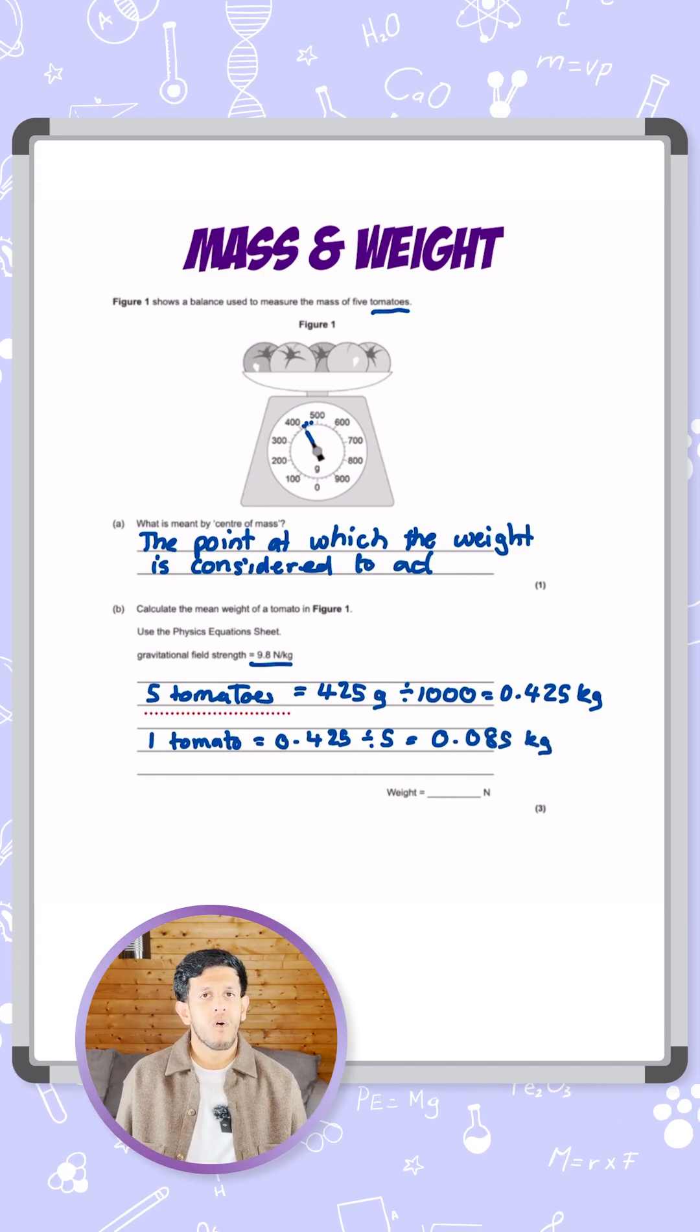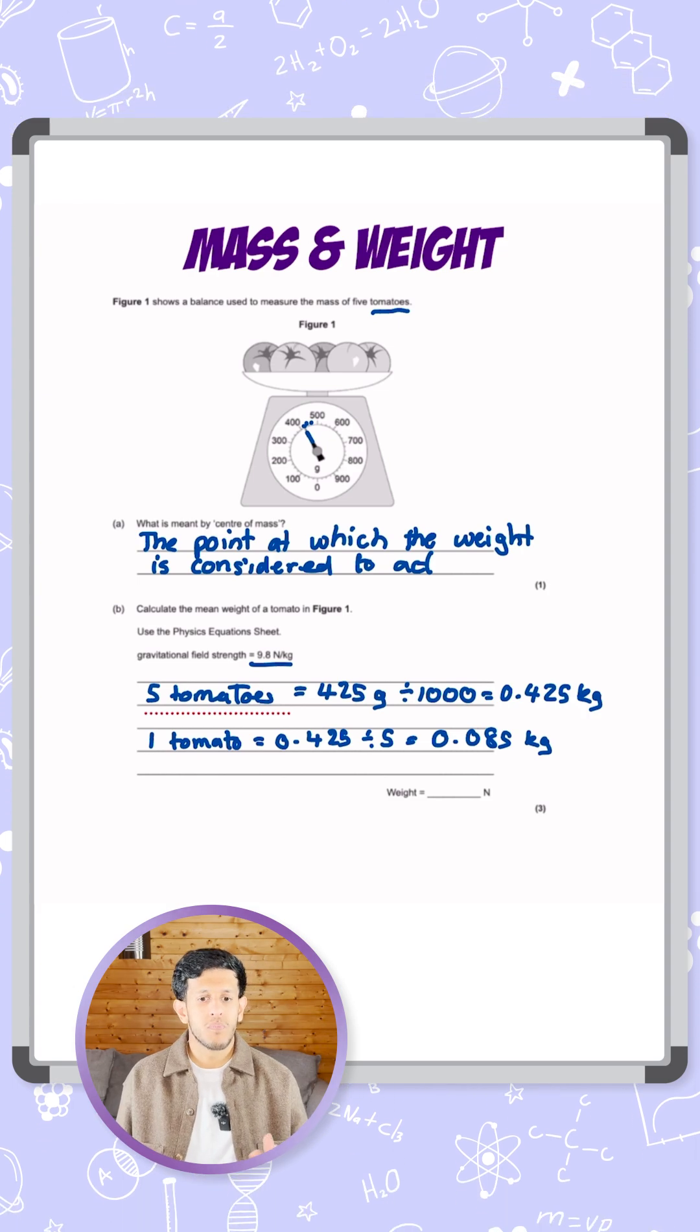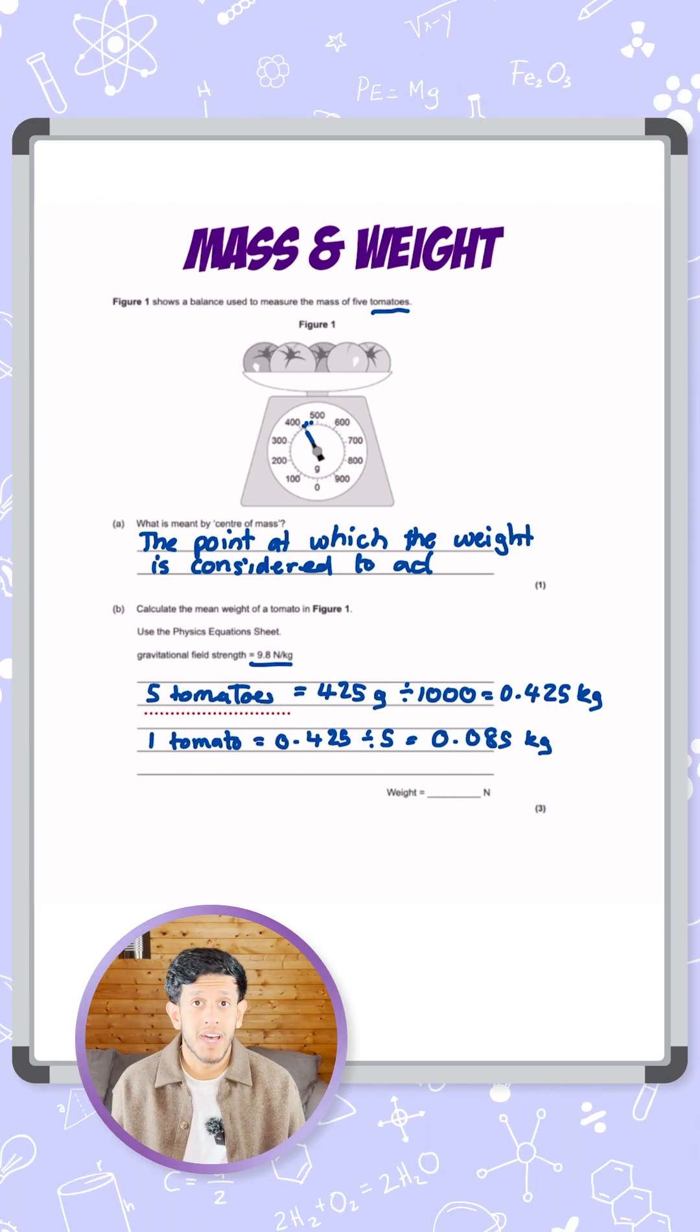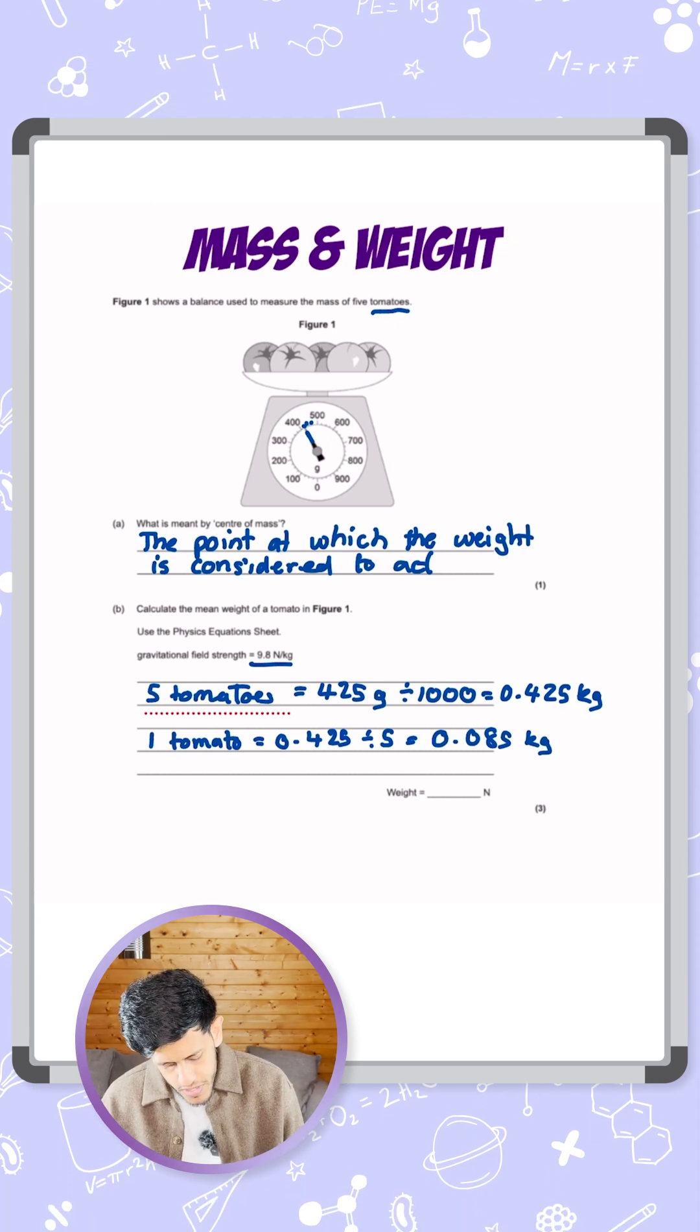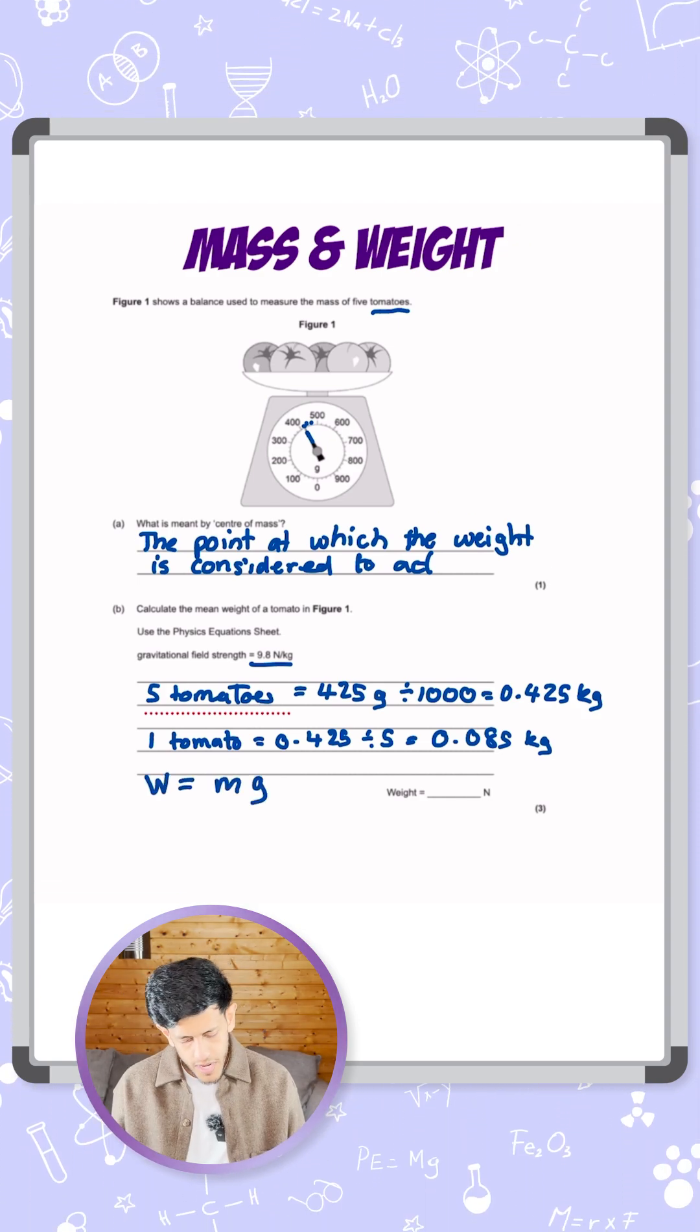Now we have the mass of one tomato, but they want us to calculate the weight. This is where we can go to the equation sheet, or if you remember it, the equation is weight equals mass times gravity. In short form, W = mg. The mass we know is 0.085 for a singular tomato times gravitational field strength of 9.8.